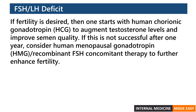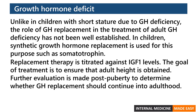If fertility is desired, one starts with human chorionic gonadotropin to augment testosterone levels and improve semen quality. If this is not successful after one year, consider human menopausal gonadotropin or recombinant FSH concomitant therapy to further enhance fertility. Unlike in children with short stature due to growth hormone deficiency, the role of growth hormone replacement in adults has not been well established. In children, synthetic growth hormone such as somatotropin is used, with replacement therapy titrated against IGF levels. The goal is to ensure adult height is obtained, with further evaluation post-puberty to determine whether replacement should continue into adulthood.